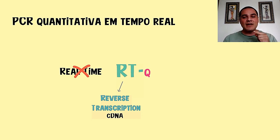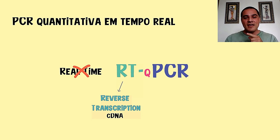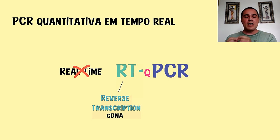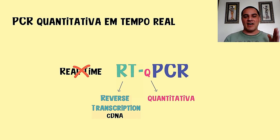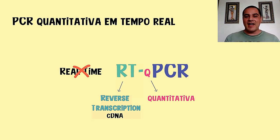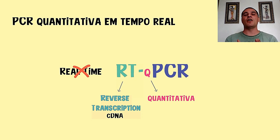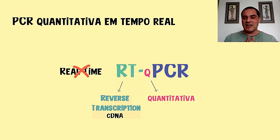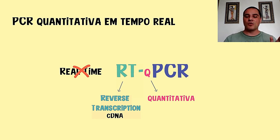Essa técnica tem uma outra letrinha a mais, que é um Q depois de RT — ela é chamada de RT-Q-PCR, para lembrar que ela é uma técnica quantitativa. O sistema de detecção é por fluorescência, então a sensibilidade é muito maior do que na PCR clássica. Nós utilizamos em diagnóstico, pois podemos detectar quantidades muito baixas de um vírus, o que não seria possível com a outra técnica.